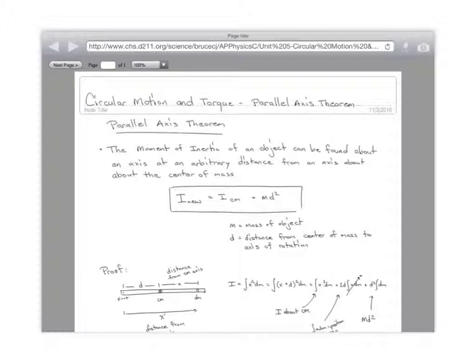About the center of mass versus about the corner. Those are two parallel axes. Parallel axes. All you have to do is take the moment of inertia about the center of mass plus the mass of the object times the distance from the center of mass to the new axis of rotation. Done. That's it.